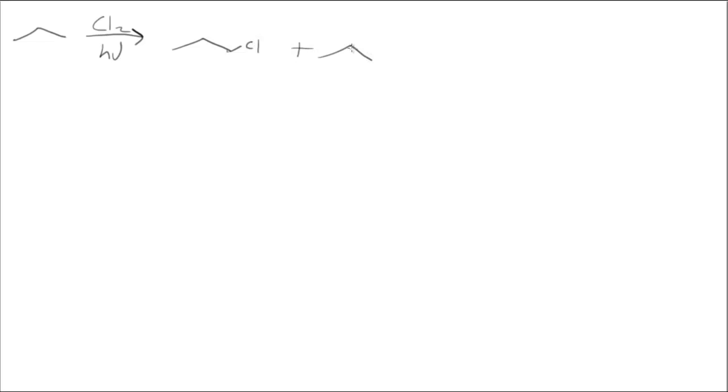So we can get the primary alkyl halide, which is formed from the primary radical, or we can get the secondary alkyl halide, formed from the secondary radical. As we established before, the secondary radical is more stable than the primary radical.